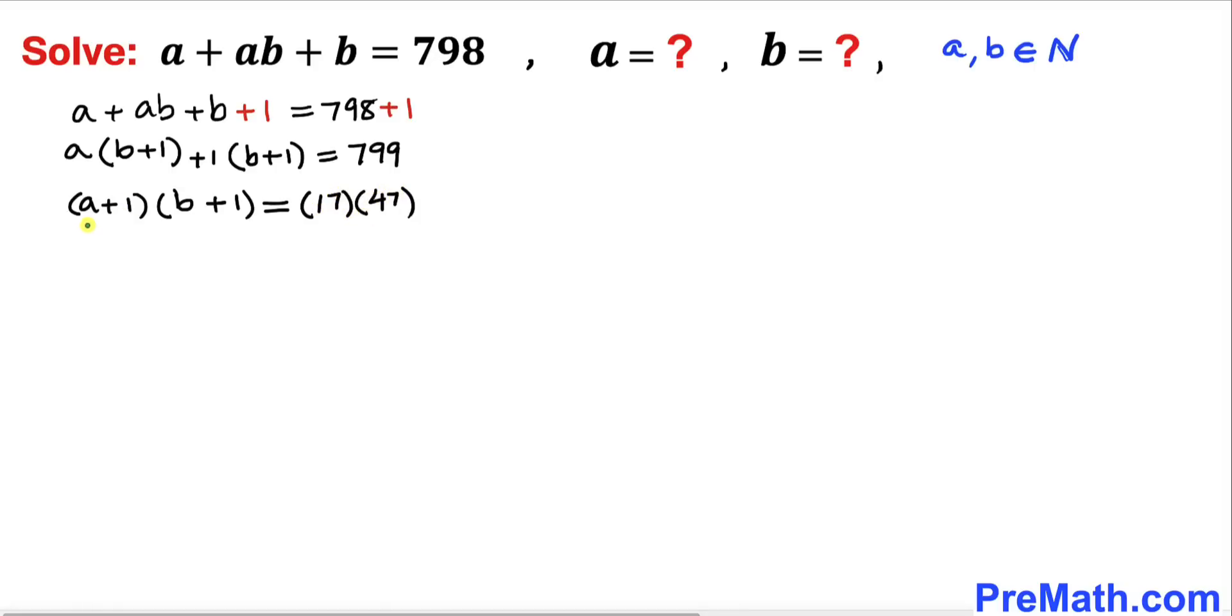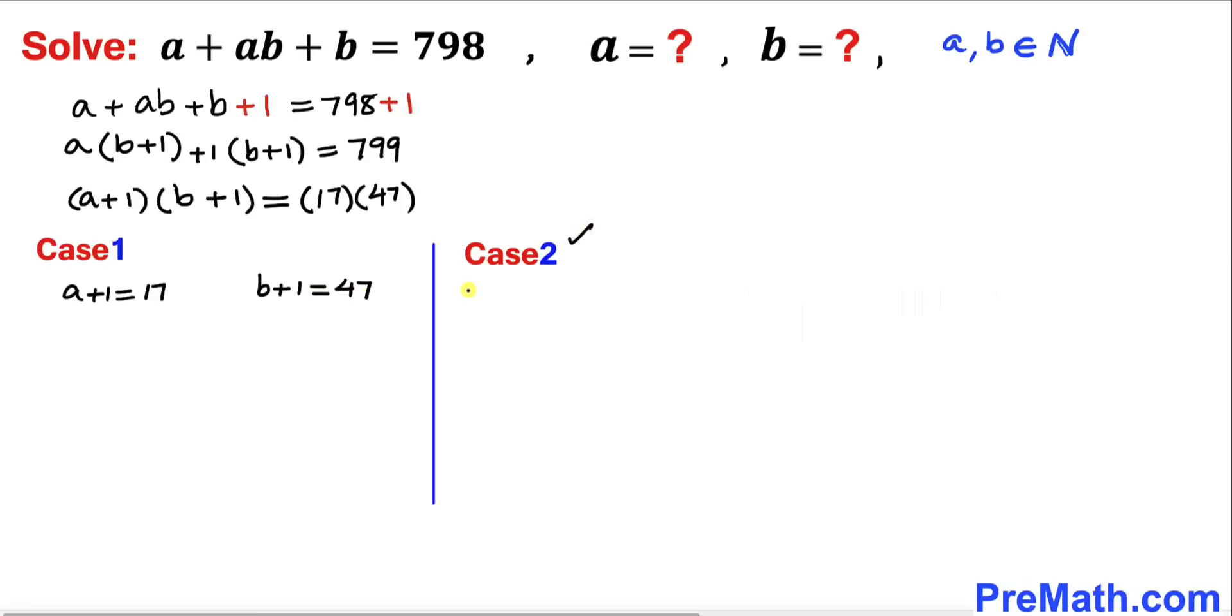Now we can see on the left hand side (a plus one) times (b plus one) equals 17 times 47. So we are going to consider two cases. Here's case one: when a plus one equals 17 and b plus one equals 47. And here's case two: when a plus one equals 47 and b plus one equals 17.